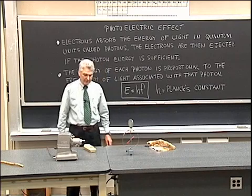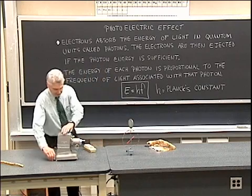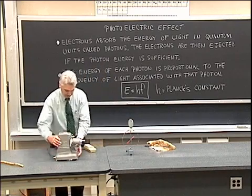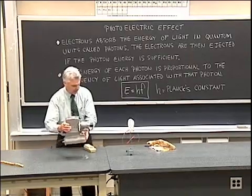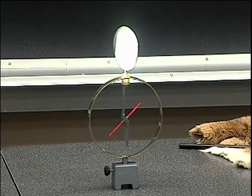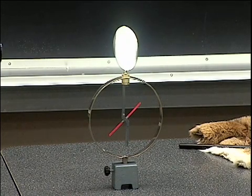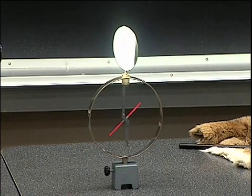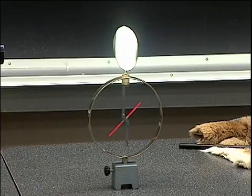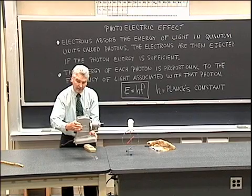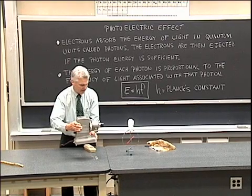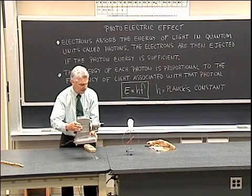And now I'm going to attempt to discharge the electroscope by shining visible light from this light projector, which is a fairly bright source of light, onto the zinc plate on top of the electroscope. And we observe what happens when I shine visible light on it, nothing happens.